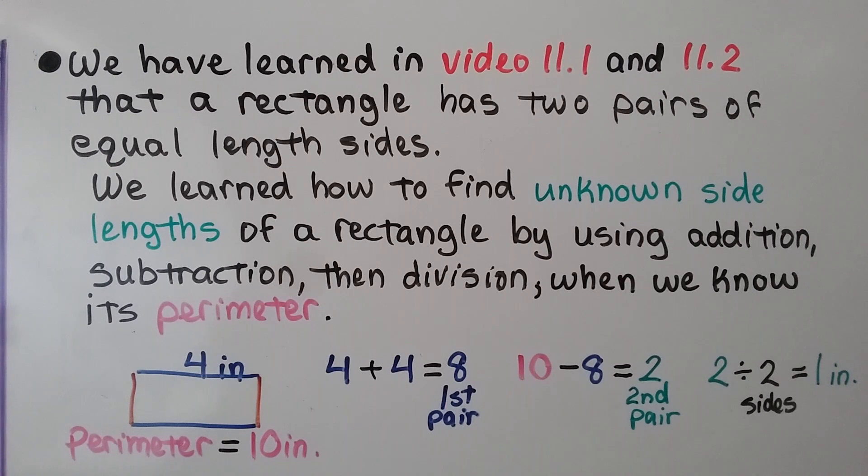We have learned in videos 11.1 and 11.2 that a rectangle has two pairs of equal length sides. We learned how to find unknown side lengths of a rectangle by using addition, subtraction, then division when we know its perimeter. So here we have a rectangle. We know its perimeter is 10 inches, but it only gave us the measure of one side, 4 inches. Well, because they have to be a pair, that means this other blue side is 4 inches. So we have 4 plus 4. That's 8 inches for our first pair.